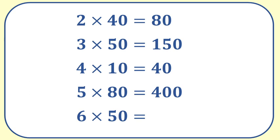5 times 80 equals 400. 5 times 8 is 40 and then we multiply by 10 to get 400. 6 times 50 equals 300. 6 times 5 is 30 and then we multiply by 10 to get 300.